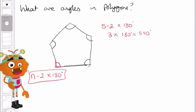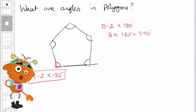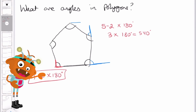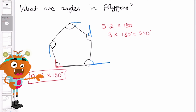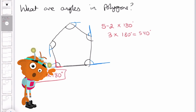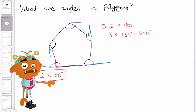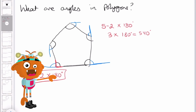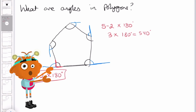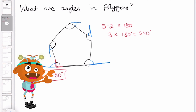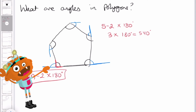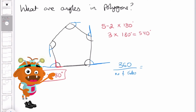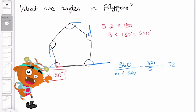If we want to work out the exterior angle, that is the angle that is outside of the shape itself. One thing to note is that both the interior and exterior angle add up to 180 degrees, as they form a straight line. The sum of the exterior angles is always equal to 360 degrees. So to calculate an exterior angle we do 360 degrees divided by the number of sides.